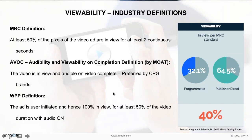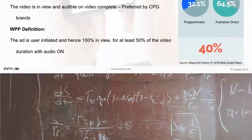Integral Ad Science's H1 2016 media quality report shows that video viewability stands at 32% on programmatic channels, where there is less control on publisher placement, and at 64% where there is a direct relationship with the publisher. These numbers are across desktop and mobile both — not specific to mobile. The adoption of video viewability on mobile is just starting out, and probably by Q1 next year we should have a lot of metrics to share.